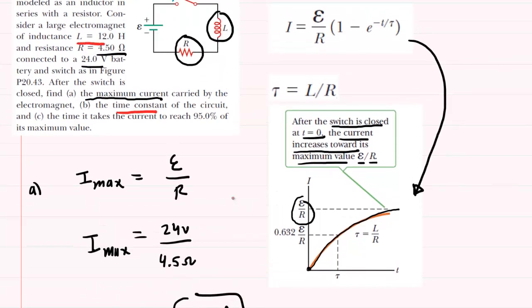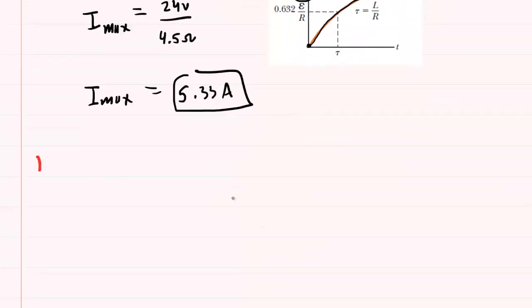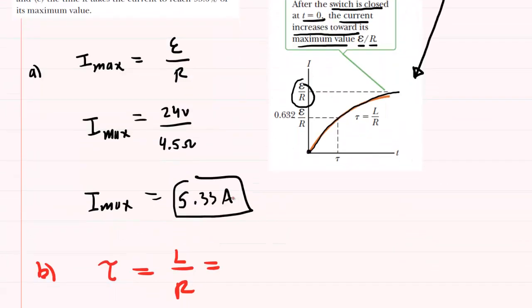We were given an inductance of 12 Henrys and a resistance of 4.5 ohms. So we'll easily be able to find the time constant in part B. The time constant is L divided by R. We'll take the L value of 12 Henrys and divide it by the resistance.